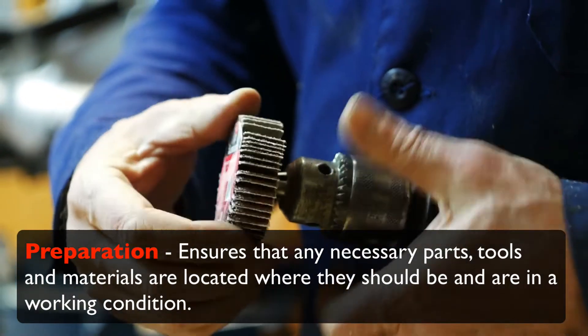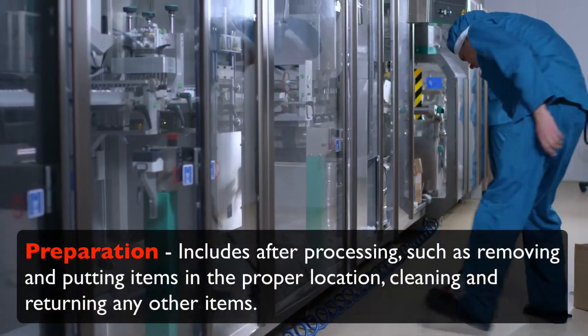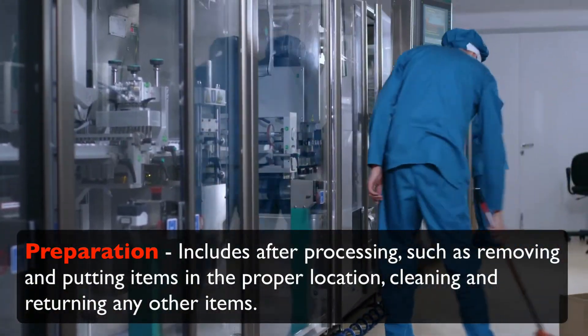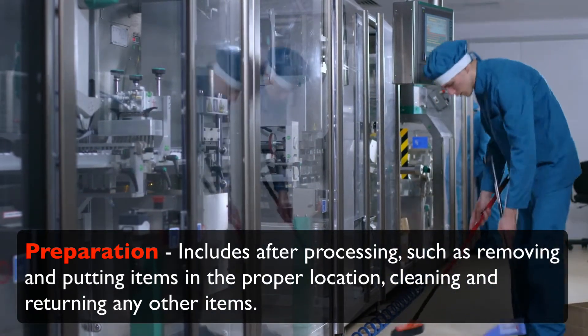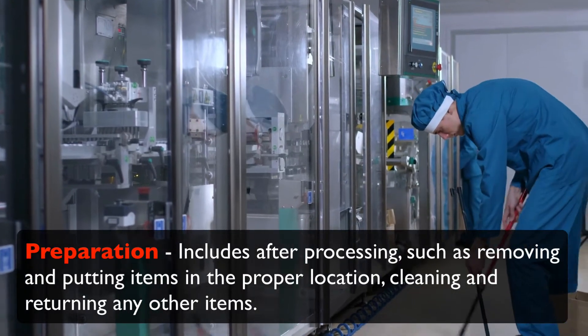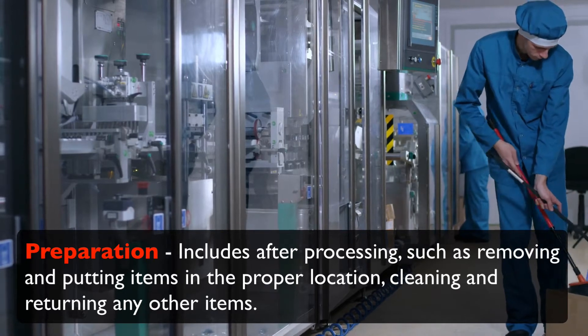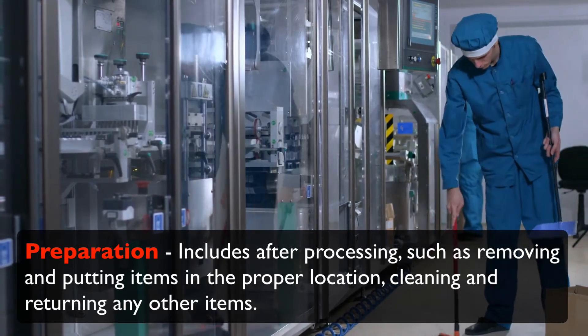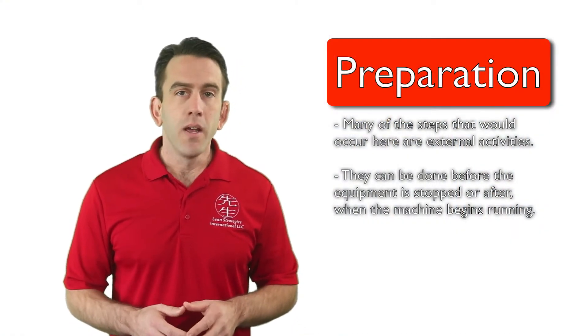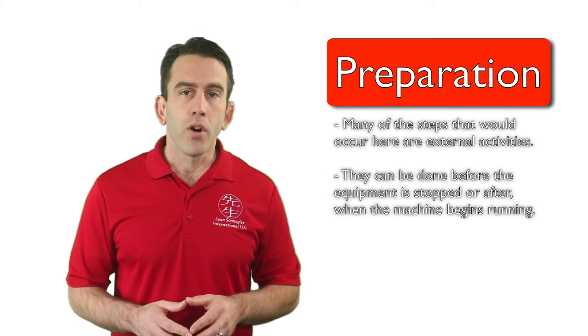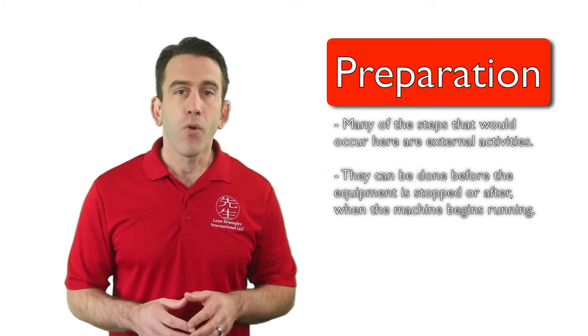This phase also includes any after processing that needs to occur, such as removing items and putting them in the proper storage location, cleaning machines or lines, and returning any other items. Traditionally this occurs when a line, operation, machine, or process is stopped. However, as you can tell by the description, many of the steps that would occur here are in fact external activities.